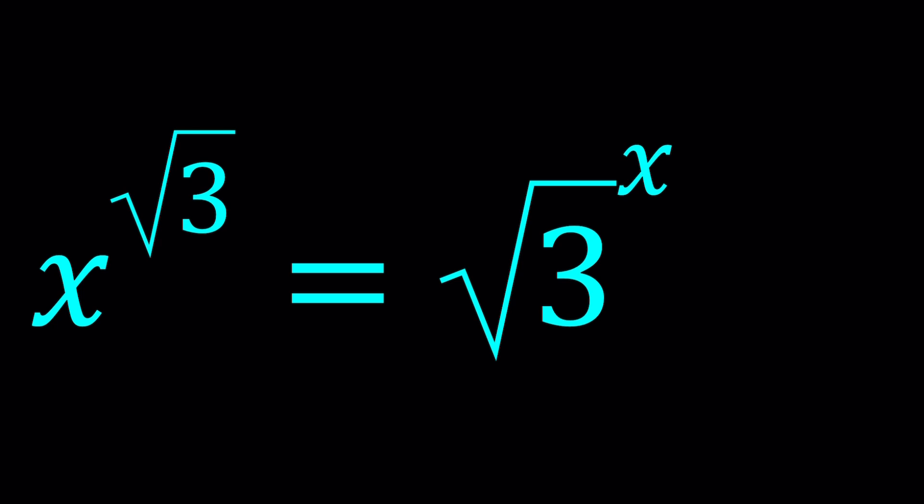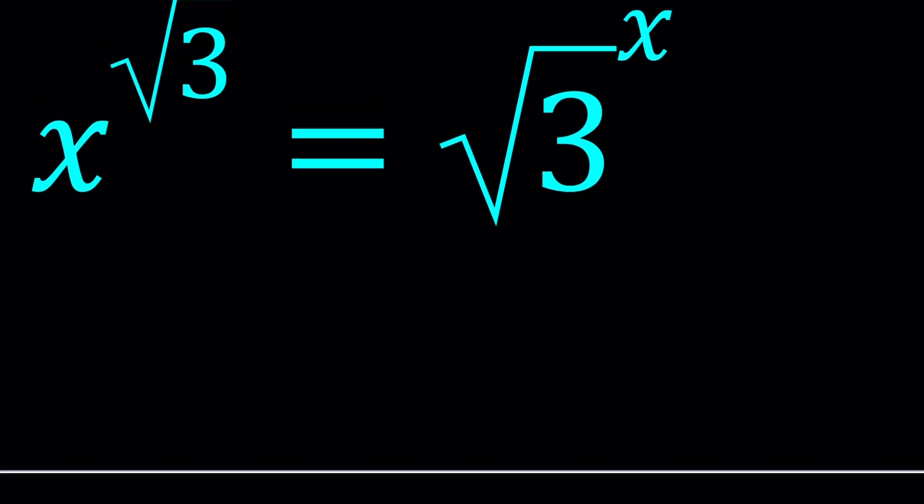Here's what I'm going to do. I'm going to write this expression as x to the power √3, and the right-hand side as 3 to the power 1/2 to the power x, because you can express √3 as 3 to the power 1/2. Then we can multiply the exponents that gives us x^√3 = 3^(x/2).